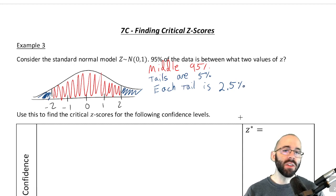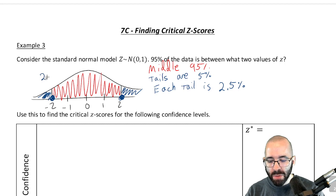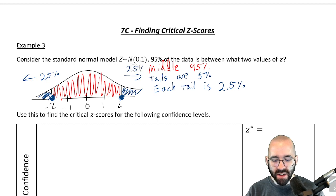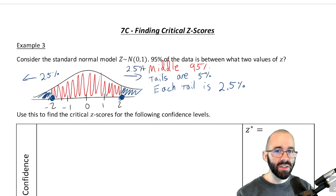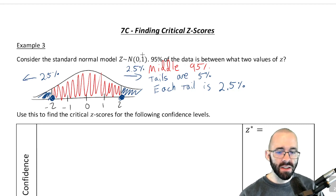So we found the middle 95% by finding what value is above 2.5% of the data and what value is below 2.5% of the data. And we can do that with GeoGebra. There are other ways, but we'll be using GeoGebra.